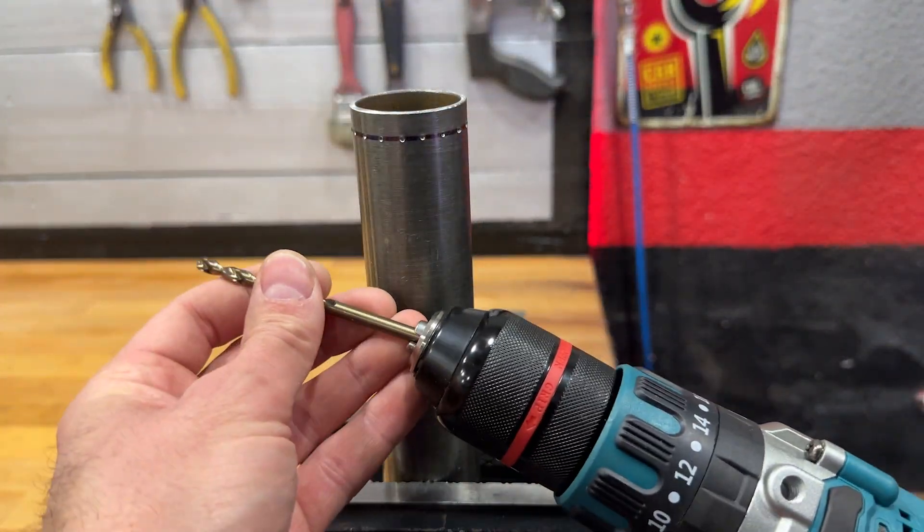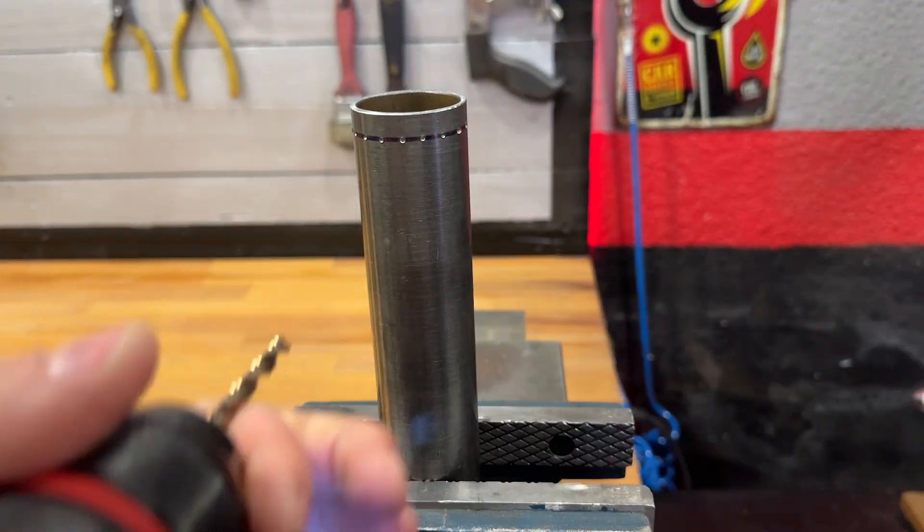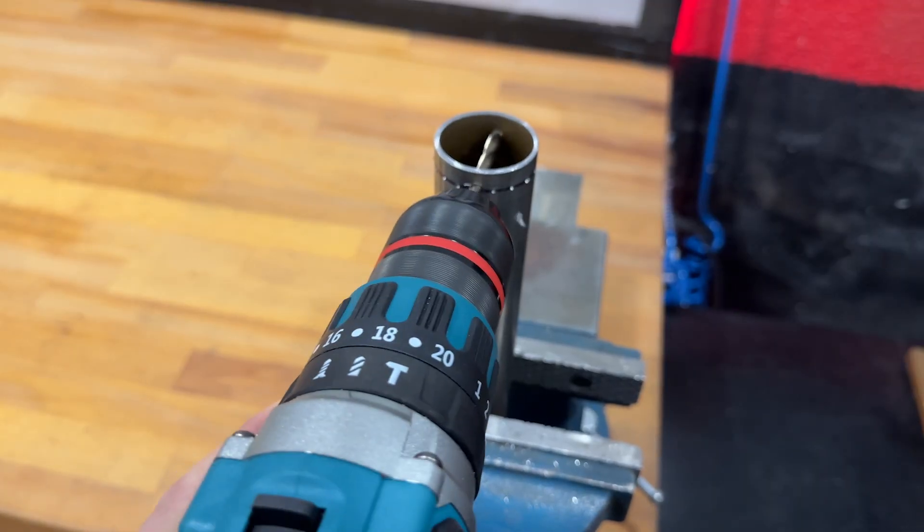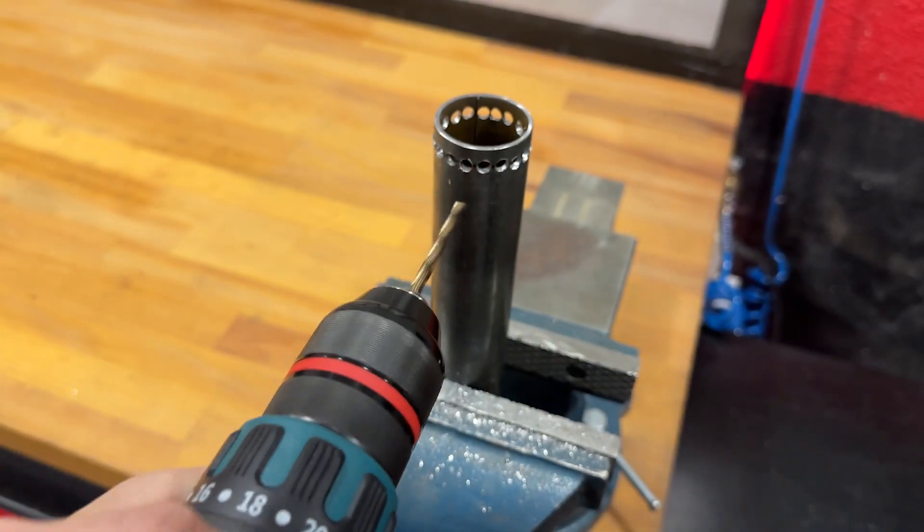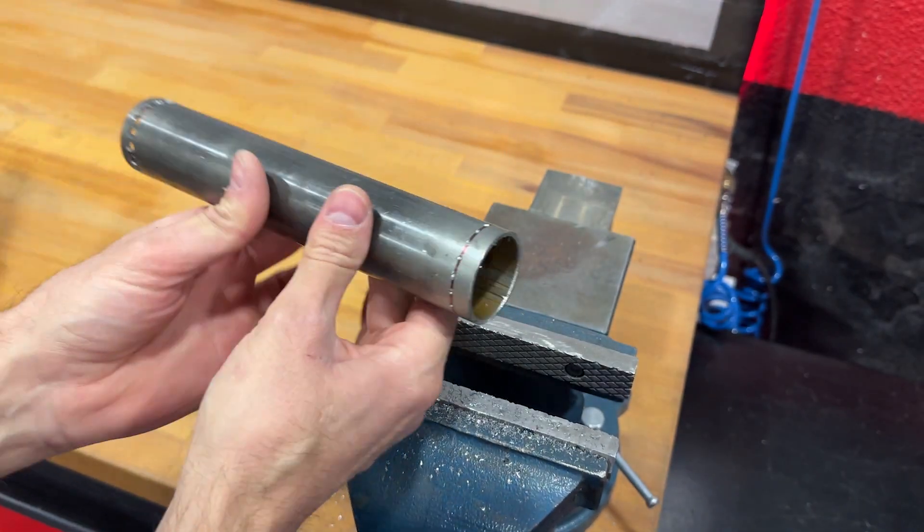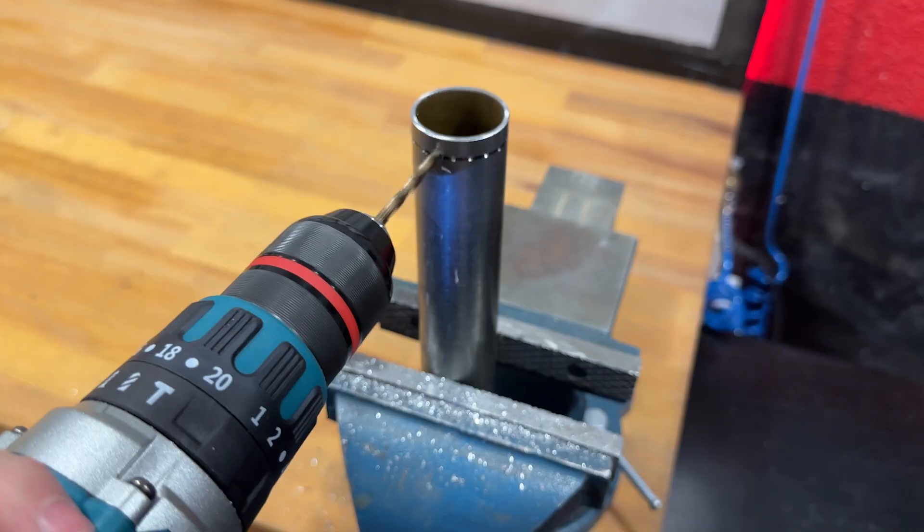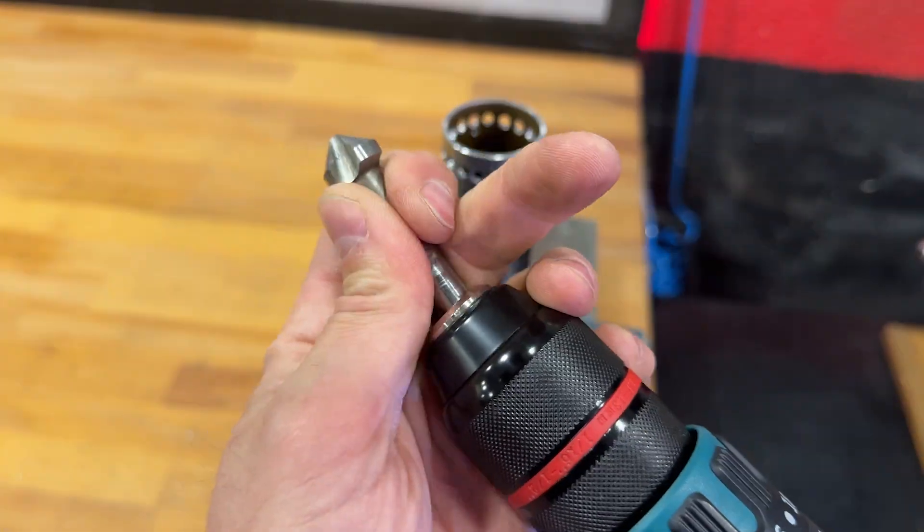With a 5mm drill bit, we'll drill a hole at each of the marks. This process must be done precisely so that the holes are evenly spaced and do not skew. We repeat the process on the other end of the pipe.